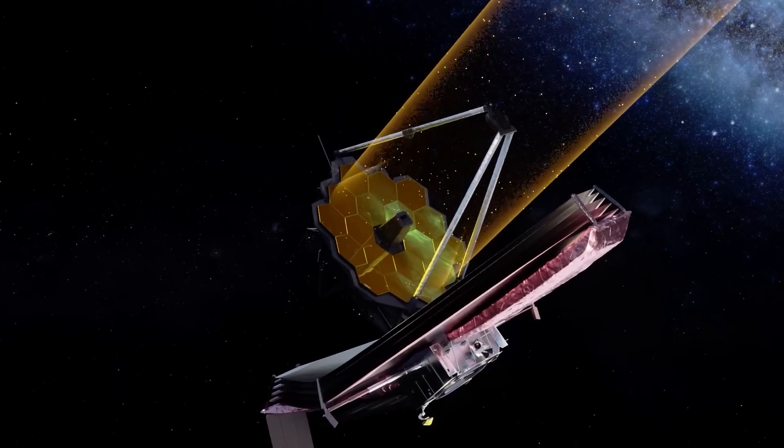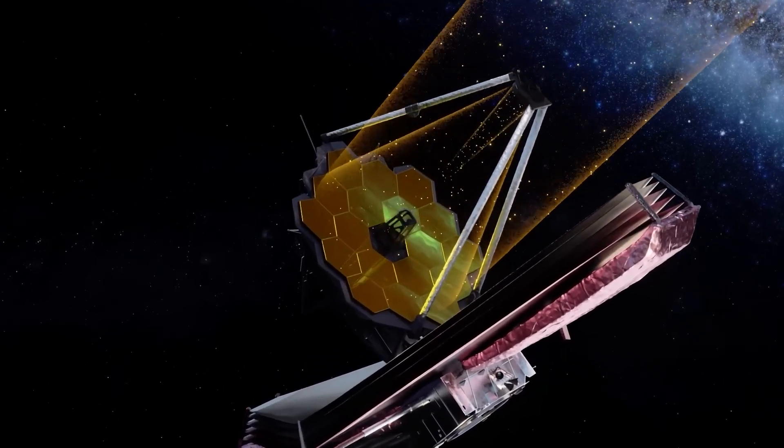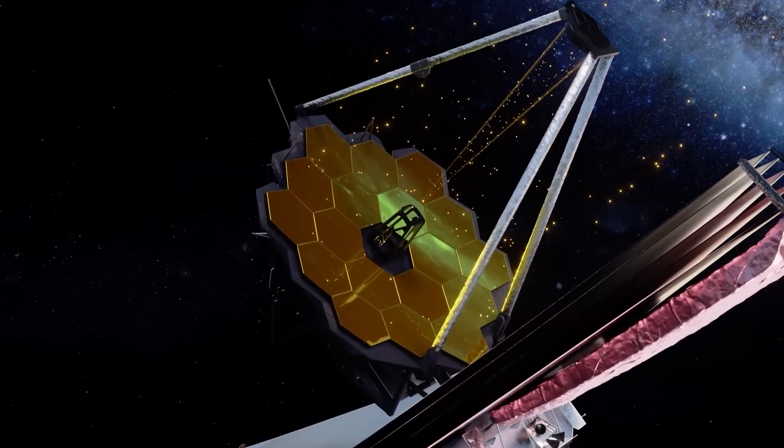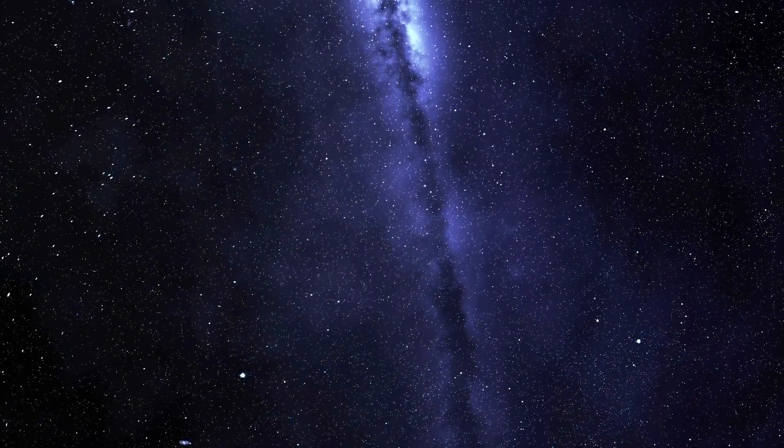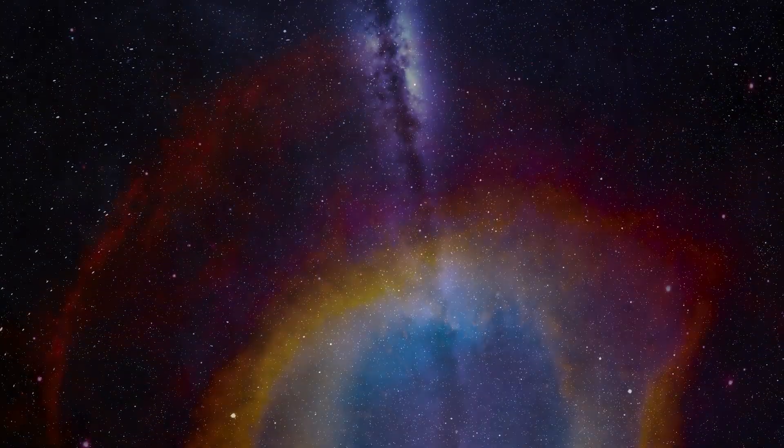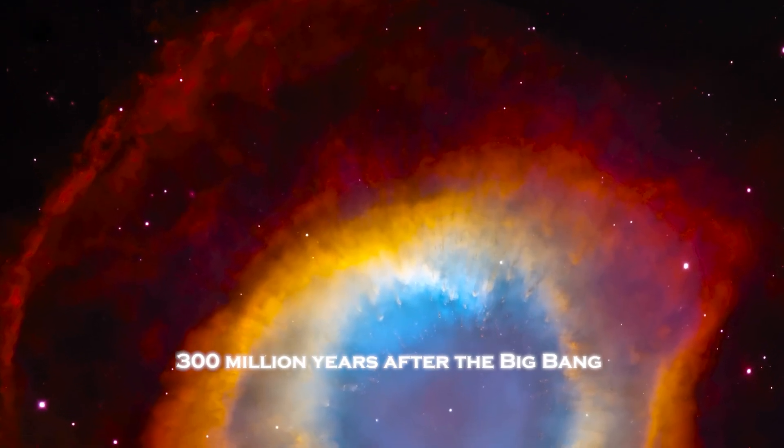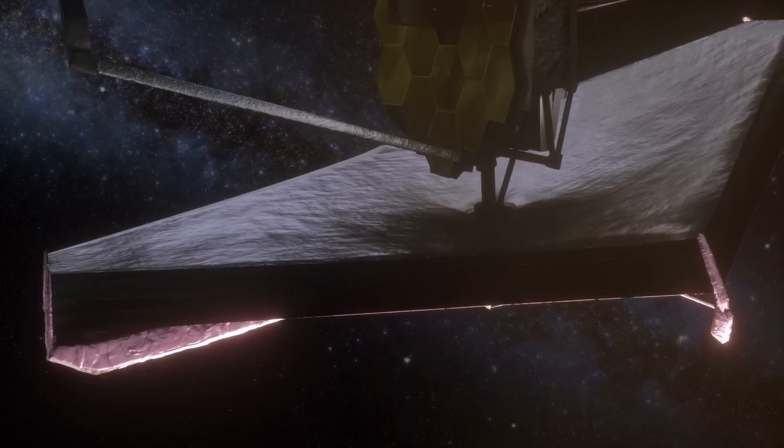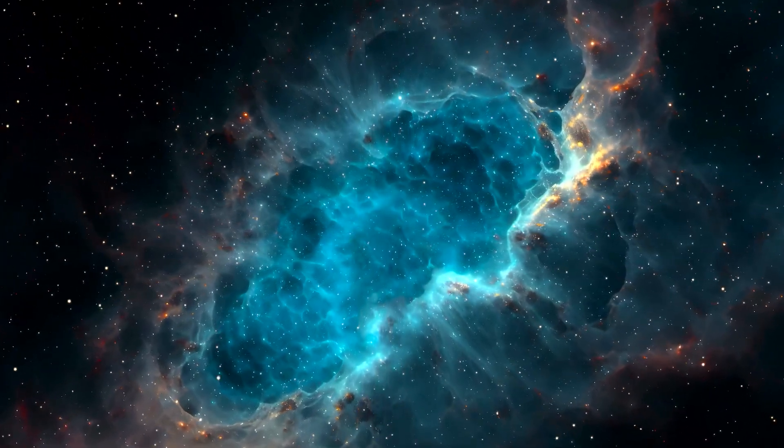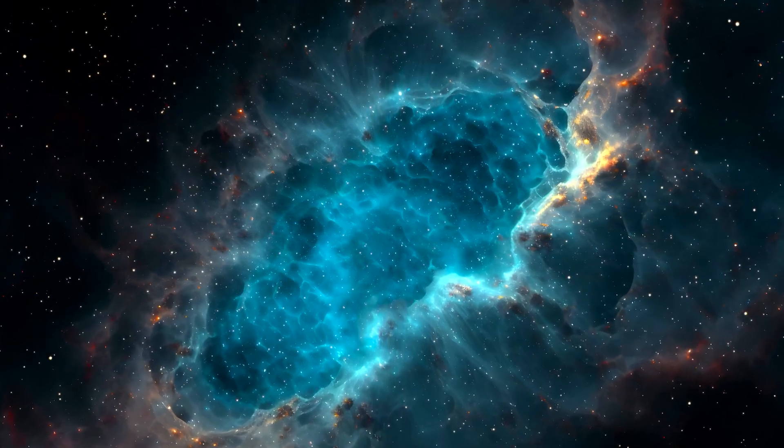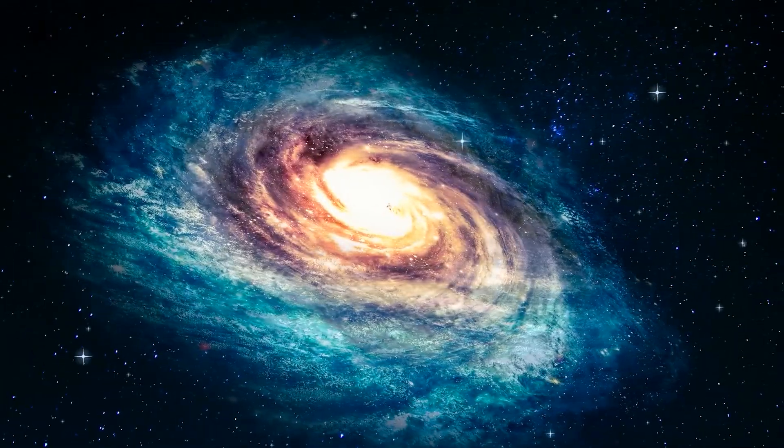One of the James Webb telescope's most groundbreaking achievements has been its ability to peer into the dark ages of the universe, the period before the first stars were born. What it found there is nothing short of astonishing. Just 300 million years after the big bang, Webb has identified galaxies with masses and structures comparable to that of the Milky Way galaxy. These galaxies shouldn't exist. Not yet.